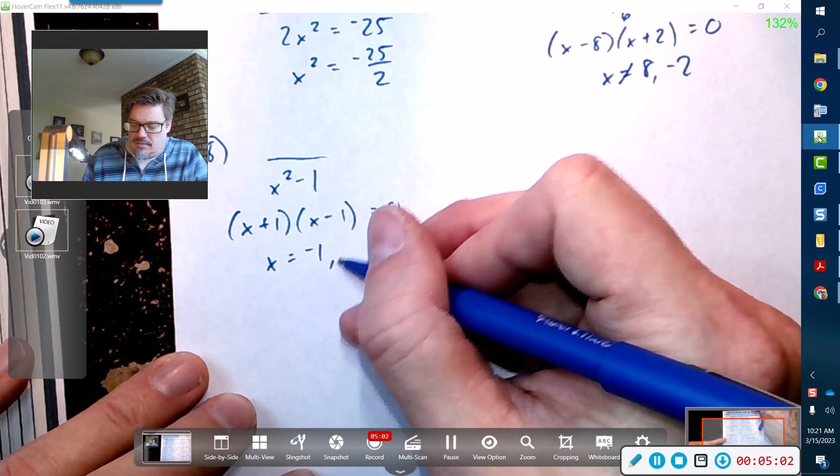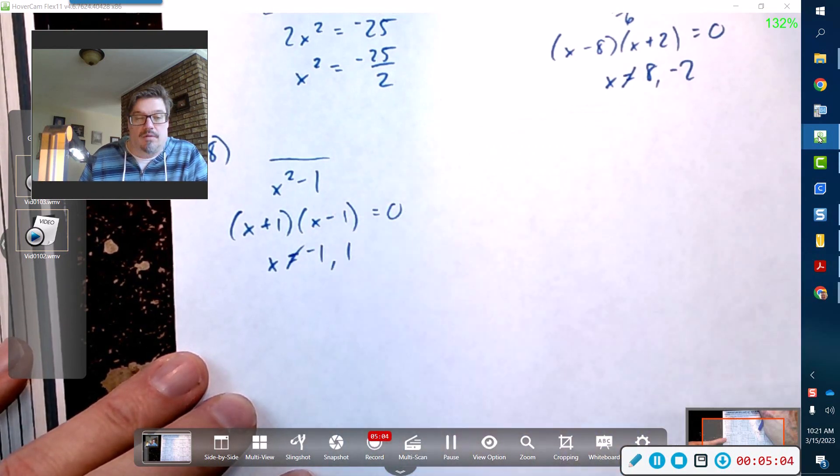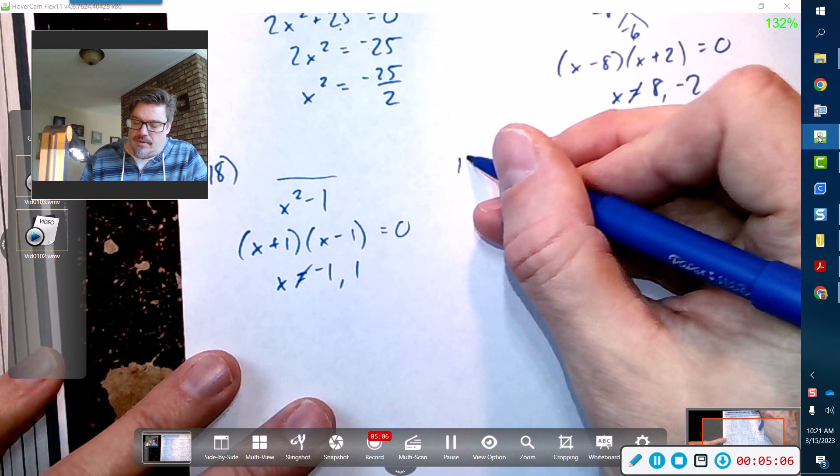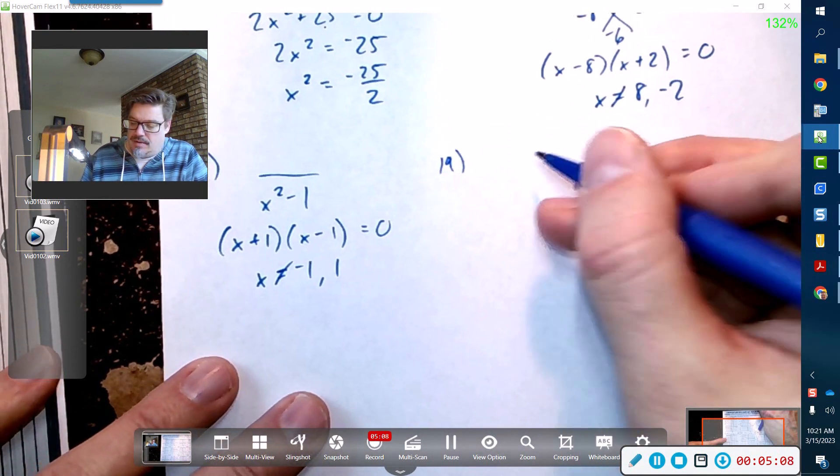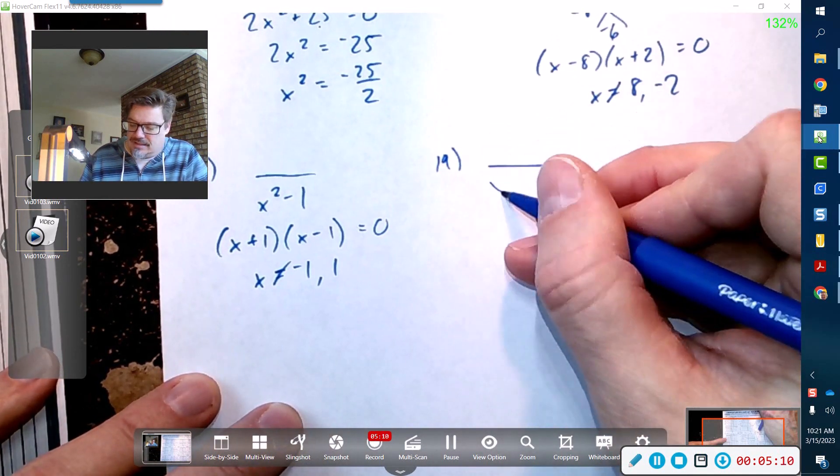Number 19, we got 3 over (x - 2). This guy's already factored, so x cannot equal 2. Sometimes it's that simple.